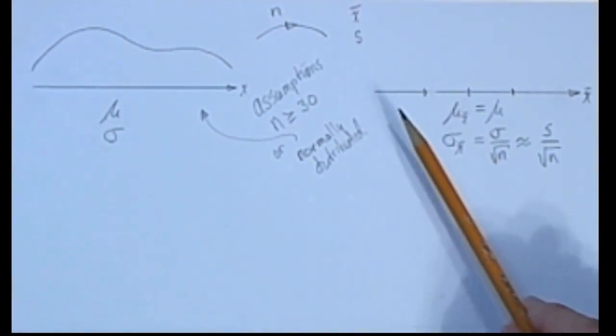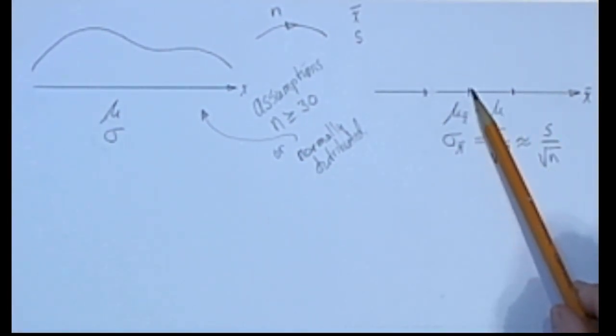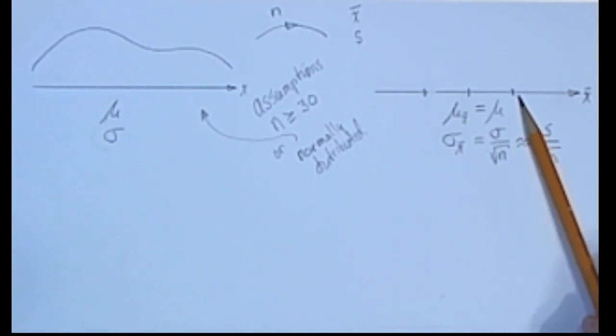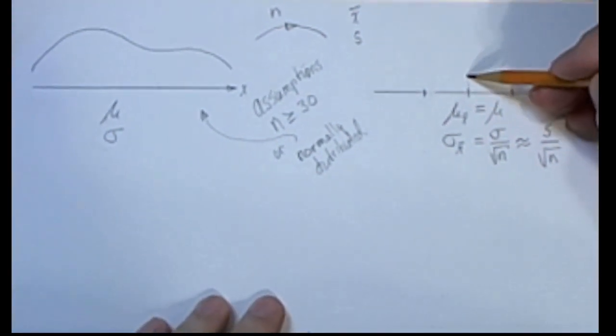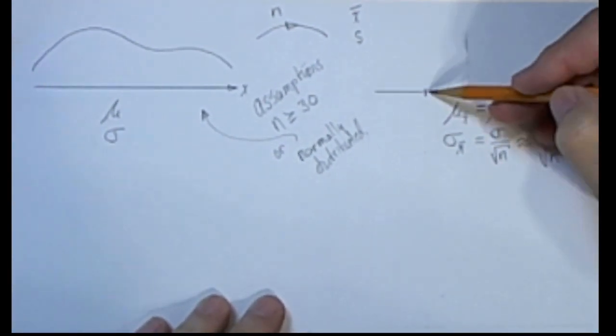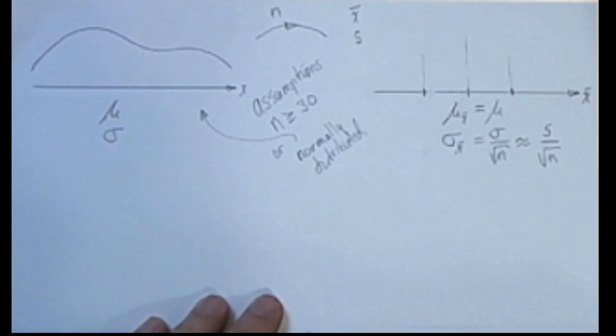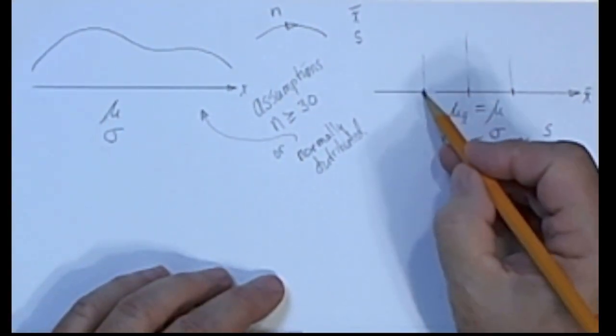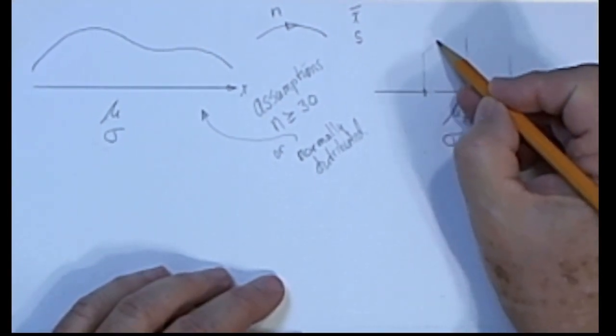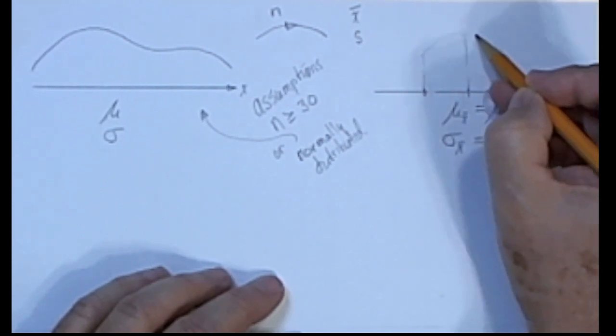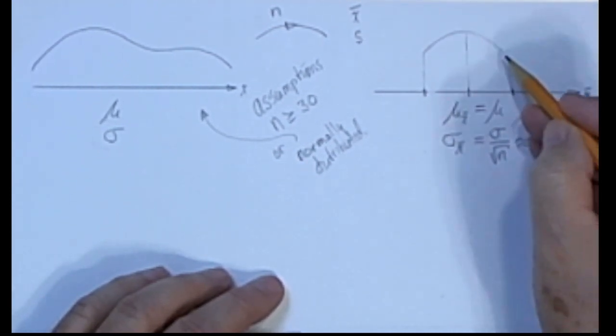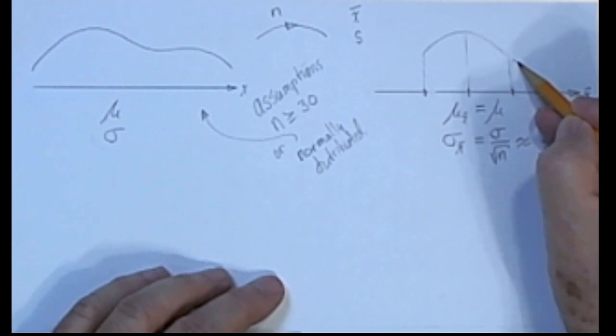So I've put three marks on this number line to indicate where the mean is, where the mean plus a standard deviation and the mean minus a standard deviation. Then we can pretty accurately draw something that looks like a normal distribution. Because within one standard deviation, a normal distribution is concave down, looking like that through that part, and outside of that it's concave up.